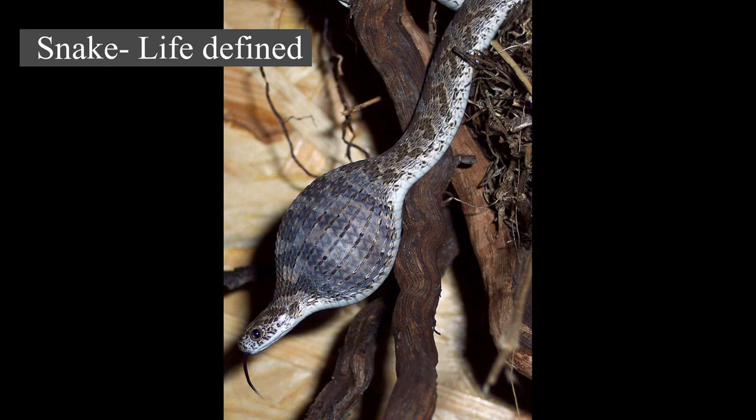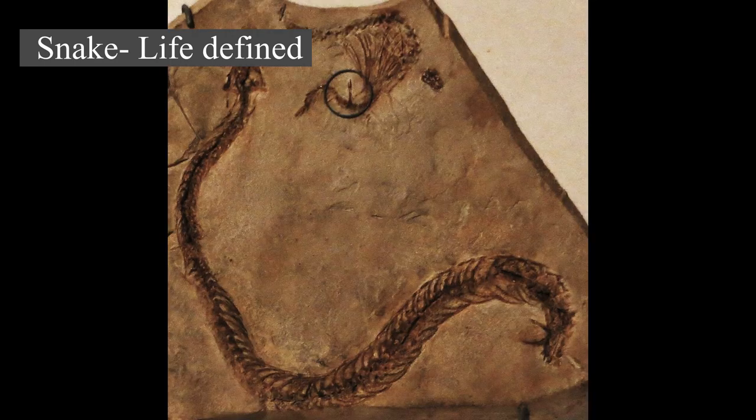Many species of snakes have skulls with several more joints than their lizard ancestors, enabling them to swallow prey much larger than their head's cranial kinesis. To accommodate their narrow bodies, snakes' paired organs, such as kidneys, appear one in front of the other instead of side by side, and most have only one functional lung.